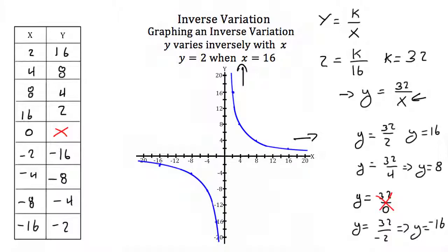Notice these graphs get very close to the axes but never touch them. That's because x can never equal zero, which would be undefined, and y can never equal zero since no x value makes y zero. As x gets very large, y gets very small but never hits zero. The graph approaches the axes but never touches or crosses them.